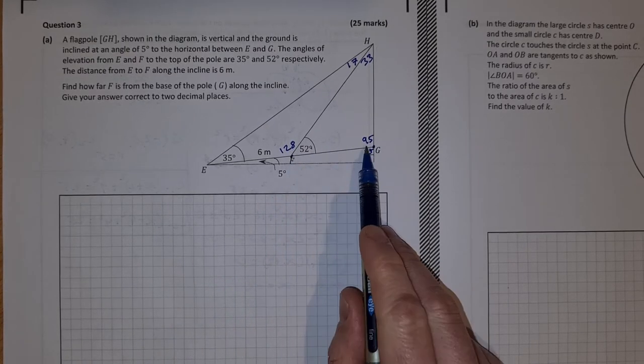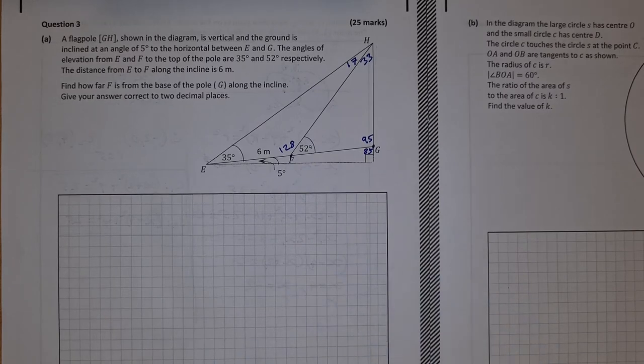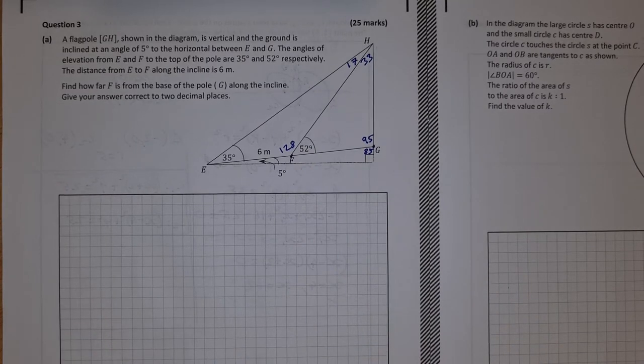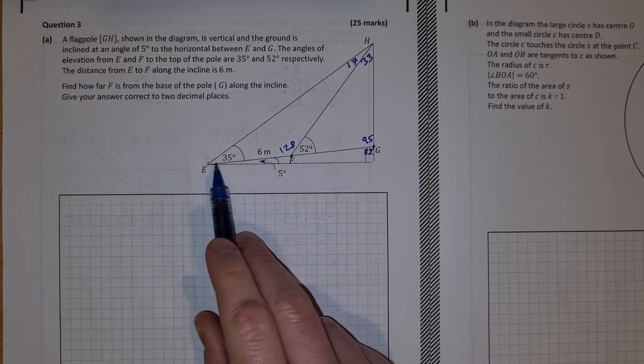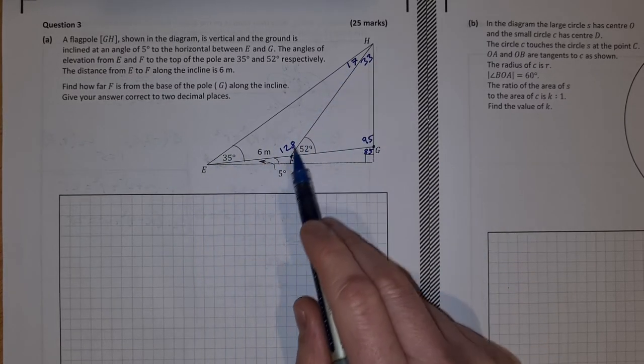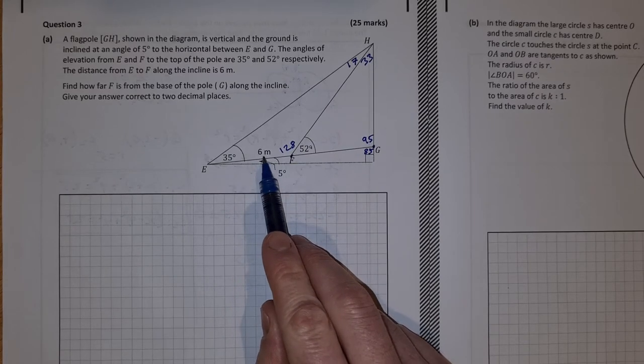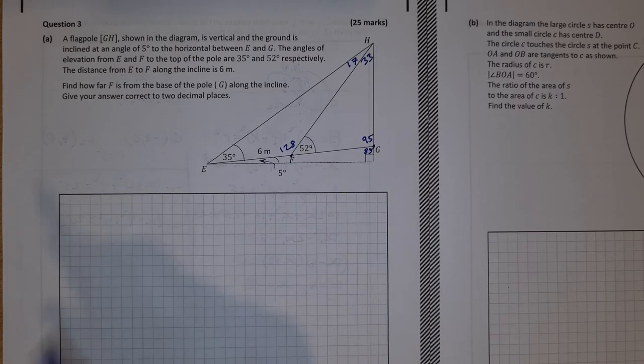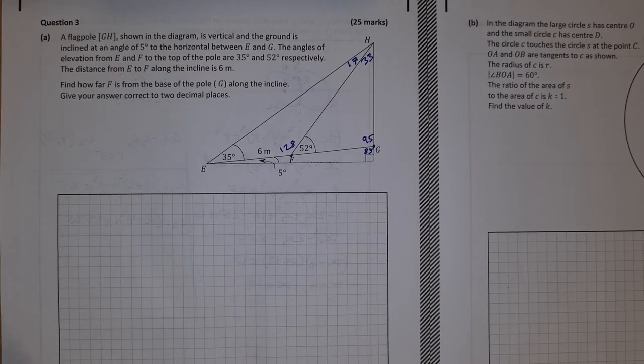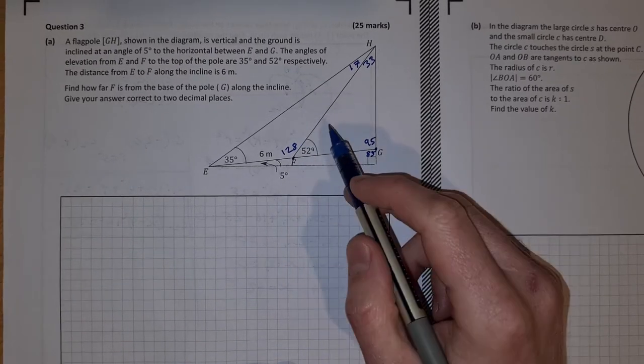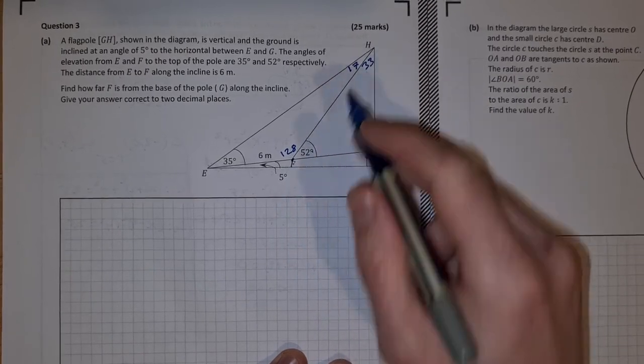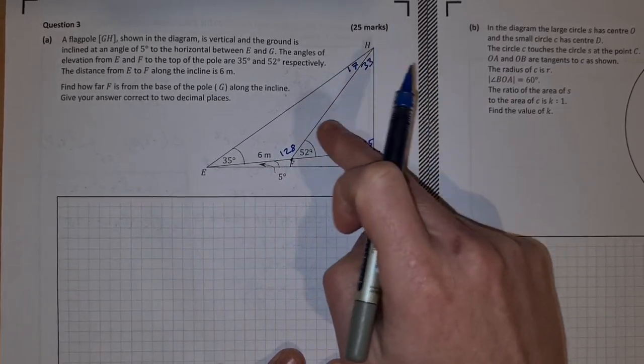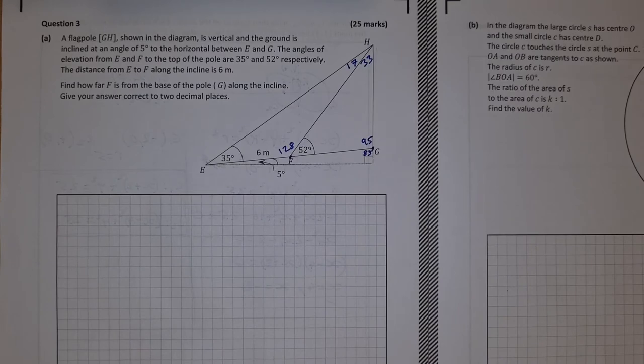We're looking to find FG, this length here. I won't be able to find it in one step, so I'll have to go and find some other lengths along the way. I have the most information in this triangle here because I have all three angles but I also have one of the lengths, so I can find either this length here or this length here by using the sine rule. It would make most sense to find this one here, FH, because that would bring me into this triangle here which is the triangle that I want more information about.